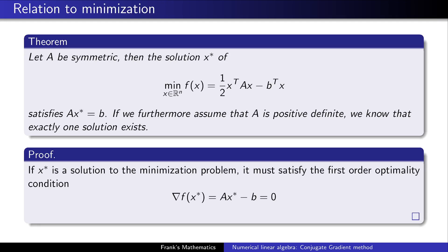In our case, we want to minimize the following function: x^T A x minus b^T x. We assume that A is a symmetric matrix. If we do so, we know that the solution x* of this optimization problem satisfies A x* equals b, and this is exactly what we want to solve. If we assume that A is positive definite, we know that exactly one solution exists. The main result is that we can couple our problem with the solution of an optimization problem.